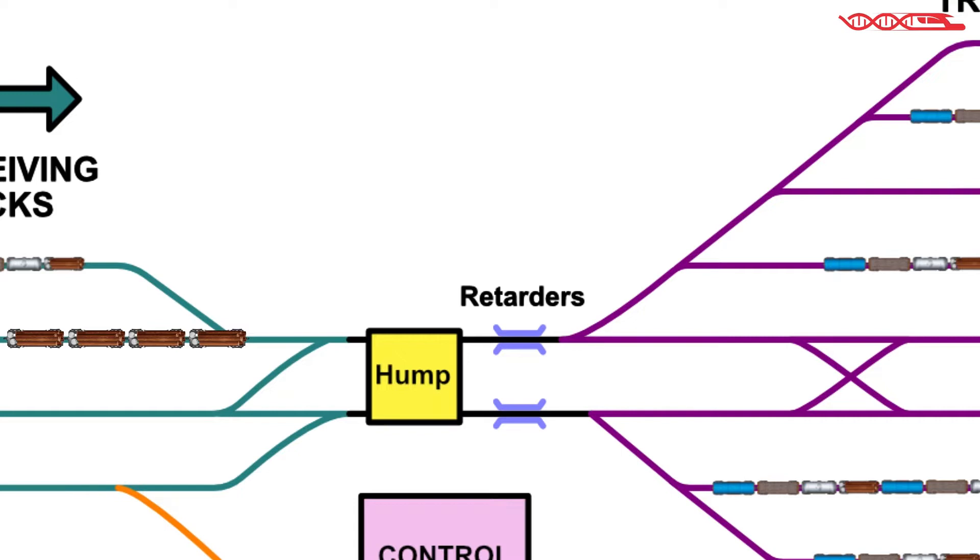This means that rail cars are pushed from receiving tracks and they go over the hump, and under gravity they go to the classification tracks. After the hump is over, there are many turnouts that lead the rail cars to desired tracks.